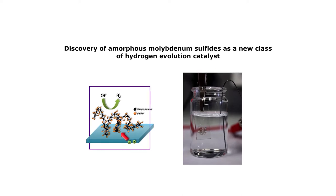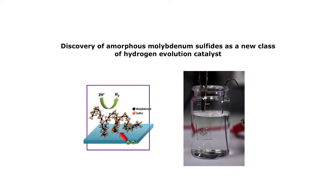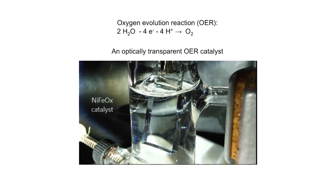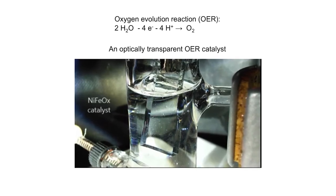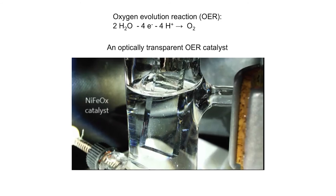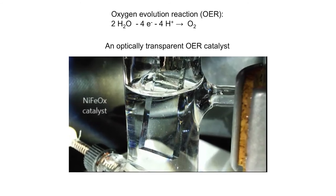We have also invented an optically transparent catalyst to make oxygen from water. This result is important because it solves one important problem in solar fuel research - that is the unproductive absorption of sunlight by catalysts.